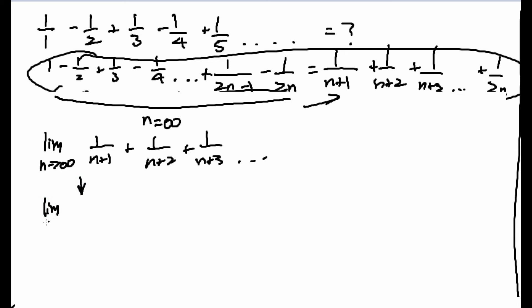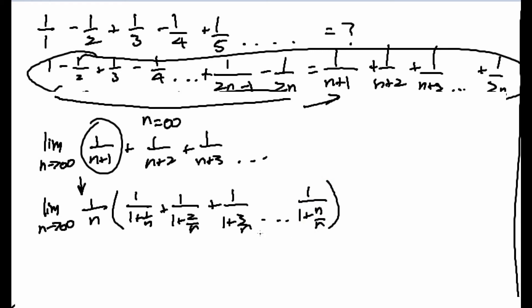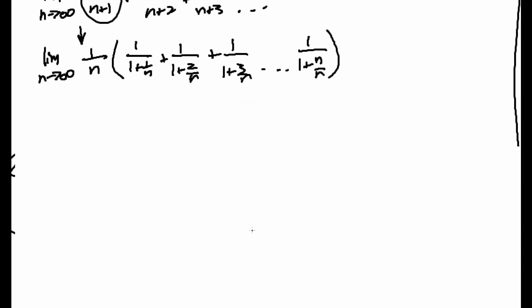So we do this: take the limit as n goes to infinity and divide every term by n. This term divided by n would give us: 1/(1 + 1/n) + 1/(1 + 2/n) + 1/(1 + 3/n) + ... + 1/(1 + n/n). And this is what we call a Riemann sum. It's coincidentally a Riemann sum, and I'll tell you what this is the Riemann sum of.